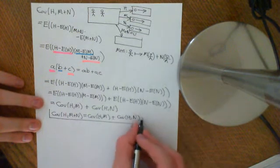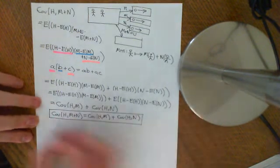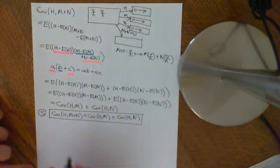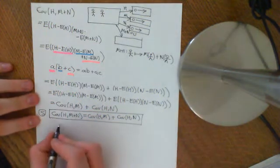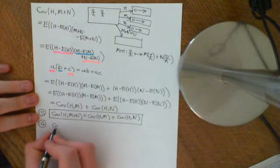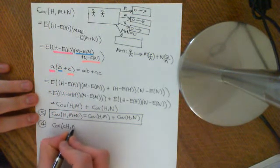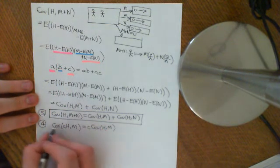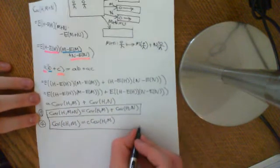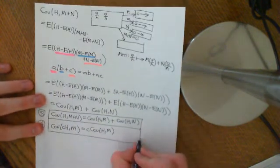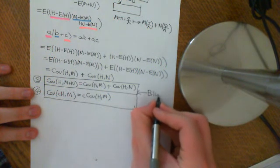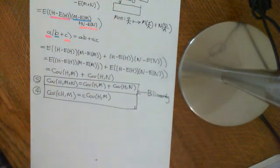That is formula five in our properties of covariance. Properties four and five together — that Cov(cH, M) = c·Cov(H,M) and that Cov(H, M+N) = Cov(H,M) + Cov(H,N) — are known as bilinearity. They have a similar name to linearity of the expected value, but these two together are called the bilinearity properties of the covariance. That's all for this video; we'll continue in the next.